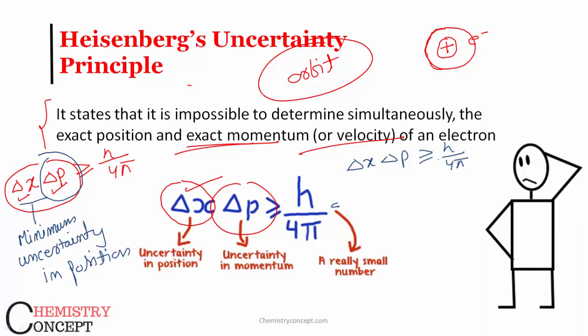Okay, what is momentum? Momentum is mass into velocity, and obviously mass is certain, mass doesn't change. So we can write it like m into del v, h upon 4 pi. So if someone asks you to find out uncertainty in velocity...